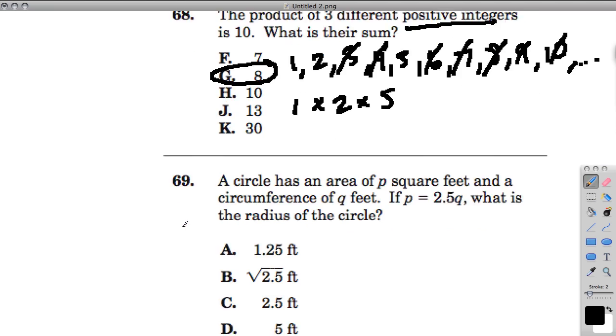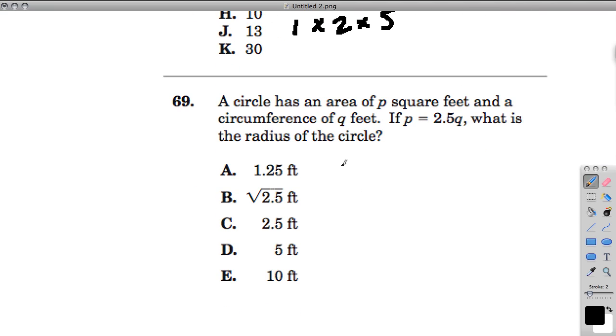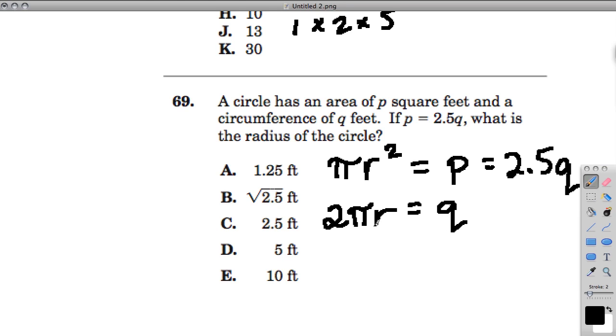And then we also have a circle. It has an area of p square feet. Remember πr², pi times the radius squared is how you find the area of a circle, and we know that equals p. And the circumference, which is 2πr, or 2r which is diameter, diameter pi, and that equals q. We're told that πr², or p, equals 2.5q. They want to know what's the radius of this circle.